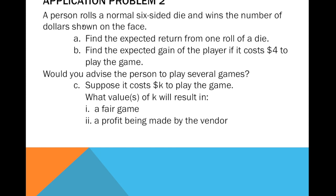Application problem number 2. A person rolls a normal six-sided die and wins the number of dollars shown on the face. Part A: find the expected return from one roll of a die. Part B: find the expected gain if it costs four dollars to play — would you advise the person to play several games? Part C: suppose it costs K dollars to play — what value of K results in a fair game, and what values result in a profit for the vendor?